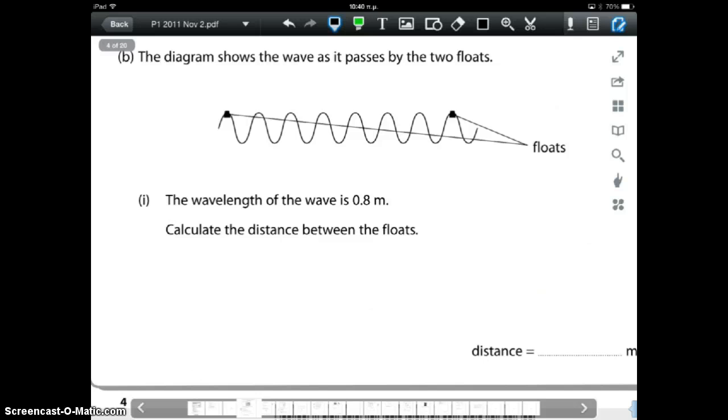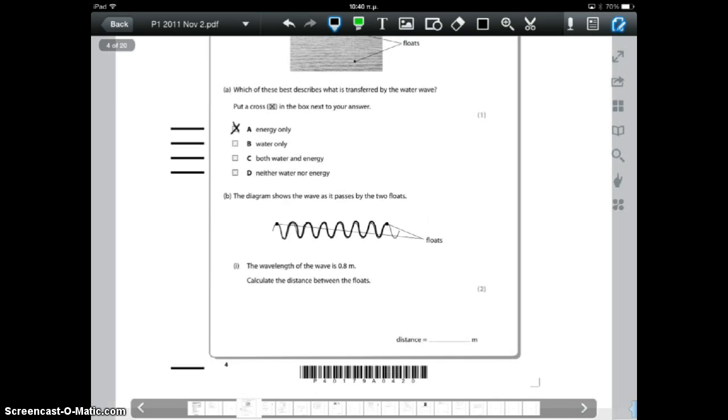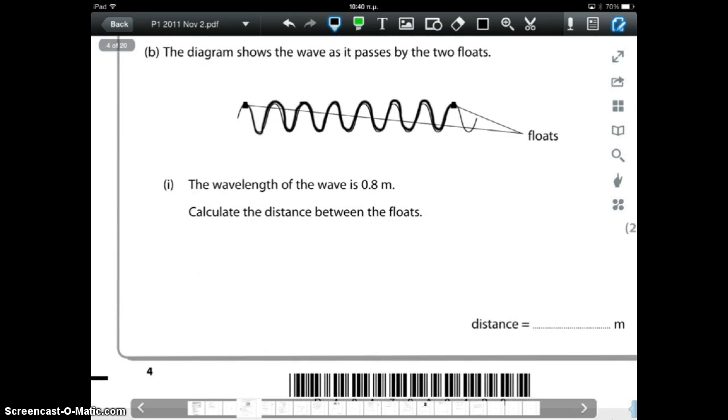Well one complete wave on this diagram for example. Let me just make it a little bit larger here. Would be from here to here one wave. Two waves. Three, four, five, six, seven complete waves. And the wavelength is the length of one complete wave or distance from peak to peak, crest to crest.